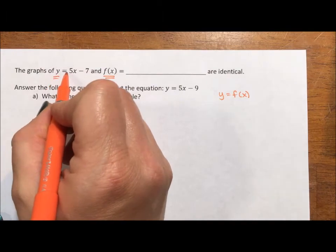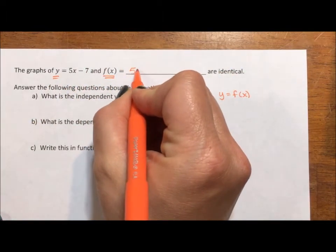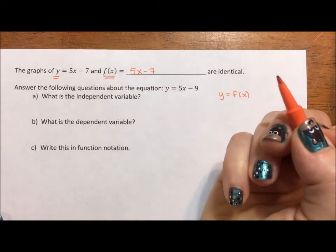So if y equals 5x minus 7, then f of x equals 5x minus 7. That's it.